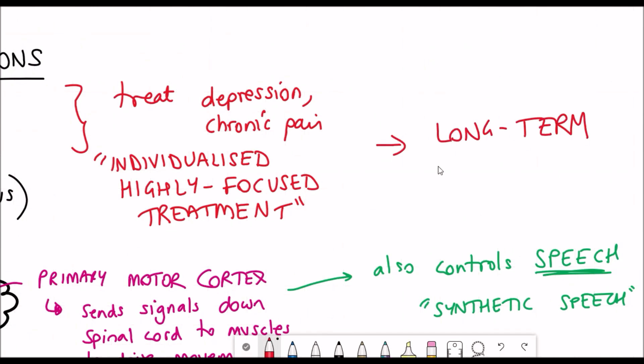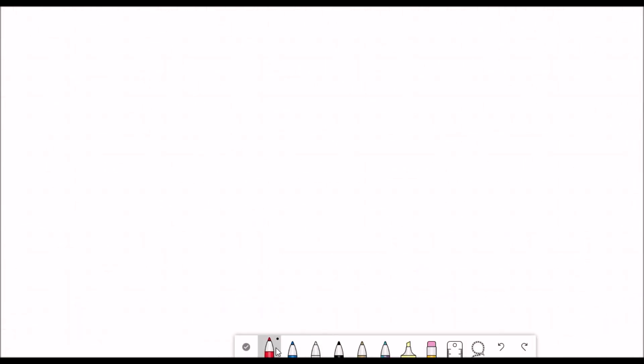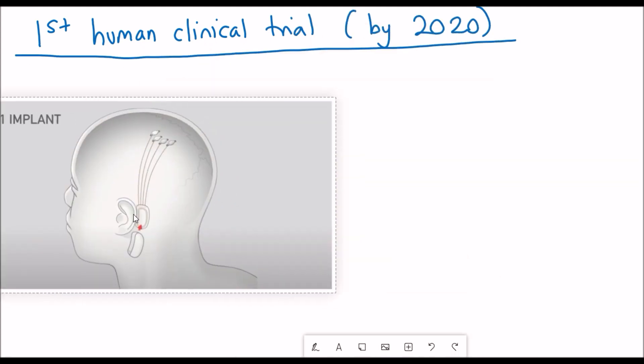These are more long-term goals so where are Neuralink currently at in terms of treatment of diseases? It was outlined in their launch event that they planned to initiate human clinical trials by the end of 2020.